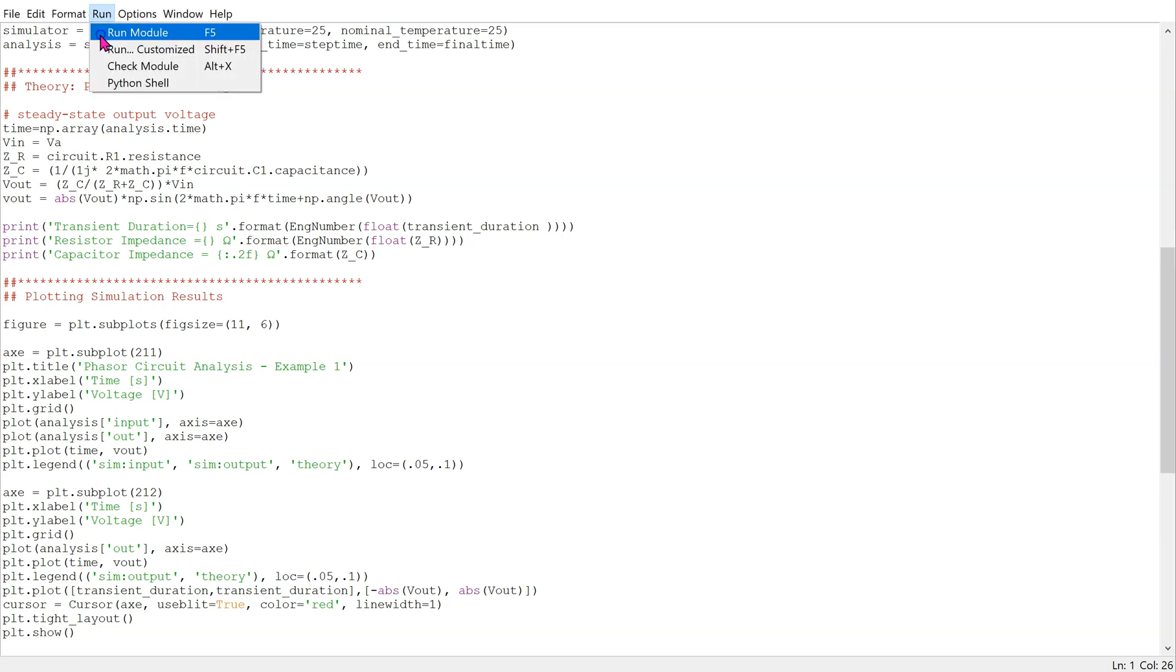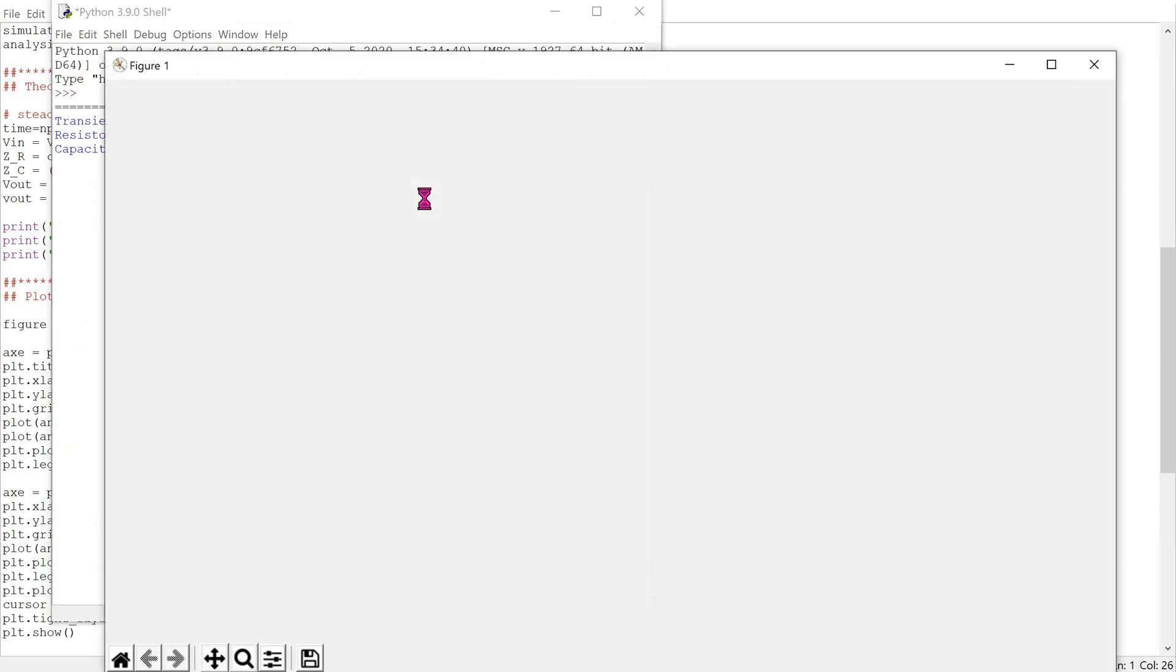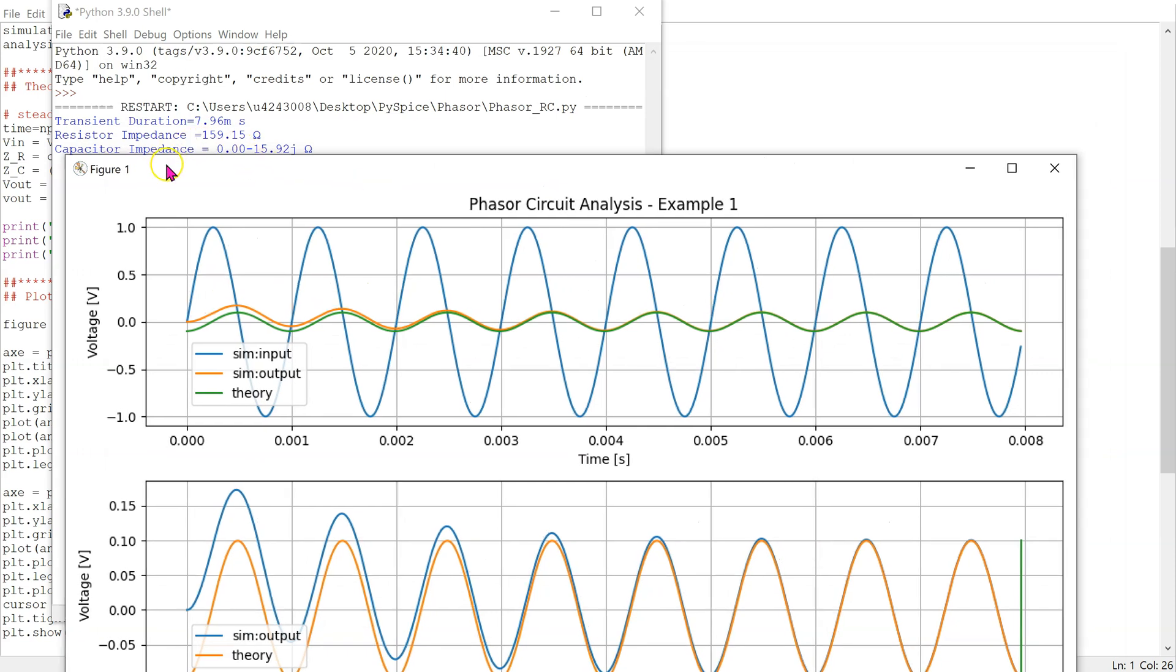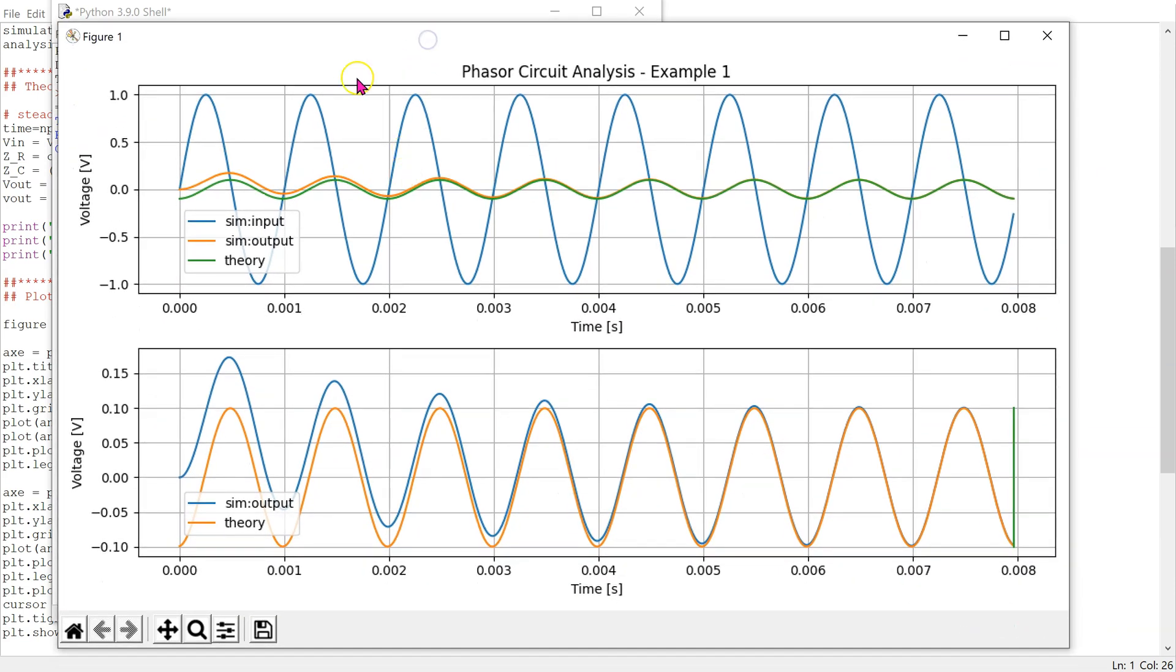When we run this code, we obtain the plots. In this case, the transient duration ends at about 8 milliseconds. This plot is showing the input, output and the theory and the second plot is zooming in on the output voltages. We can see that the theory, which is the orange curve, matches the simulation, which is the blue curve, after about 5 time constants.